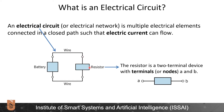Here the resistor is the simplest circuit element, which is a two-terminal device, with terminals A and B, through which a current can flow, and between A and B we have a voltage or potential.